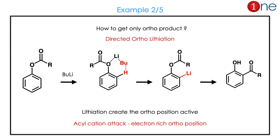The next example is very interesting and important: directed ortho-metalation. If you use butyllithium, you get only the ortho position. The ortho position is activated by lithium — it forms a stable six-membered ring and the ortho position is occupied by lithium. Then the rearrangement occurs, giving only the ortho product. So directed lithiation promotes only the ortho product.